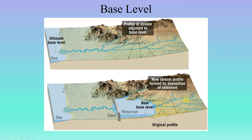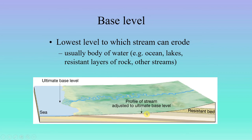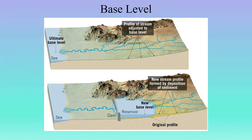Once water comes out of the channel, energy dissipates and sedimentation is deposited. Left alone, these reservoirs would eventually fill in from the back and create a new stream profile. Having this new, higher base level adjusts the entire profile of the stream uphill from the reservoir — it no longer has to go down to sea level, only down to the reservoir level. Around here in Michigan, rather than targeting sea level, a good local base level for us is Lake Michigan itself.